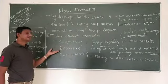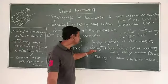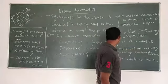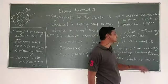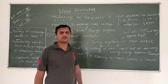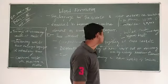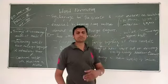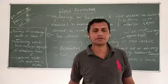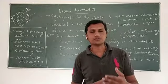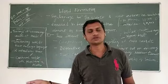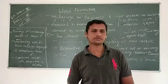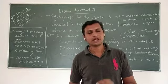The second method is derivation. Derivation means making new words out of existing ones by adding a prefix or suffix. Prefix means 'pre' — like primary, preliminary. And suffix is added at the end. For example, in the text there are many beautiful examples of prefix and suffix.